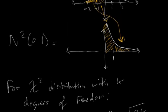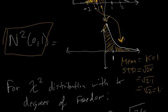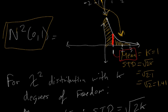For a chi-squared distribution with 1 degree of freedom — because there is only one standard normal being squared — the mean is equal to k, which is 1. The standard deviation is equal to the square root of 2 times k, which is the square root of 2 times 1, equal to the square root of 2, approximately 1.41. So the mean is 1 and the standard deviation is 1.41. One standard deviation to the right of the mean would be roughly 1 plus 1.41, landing at about 2.41.